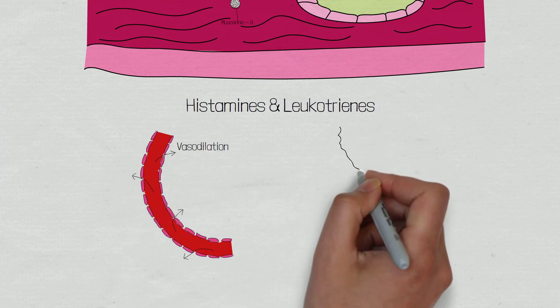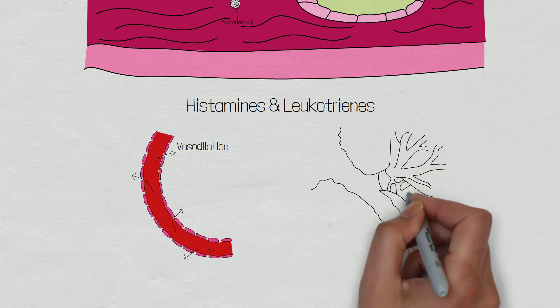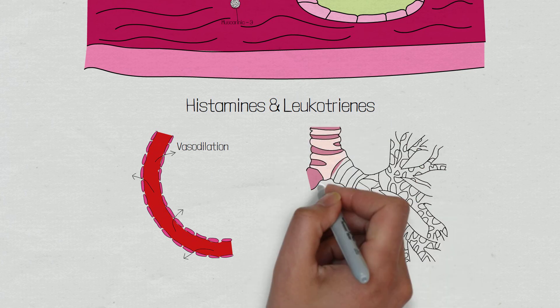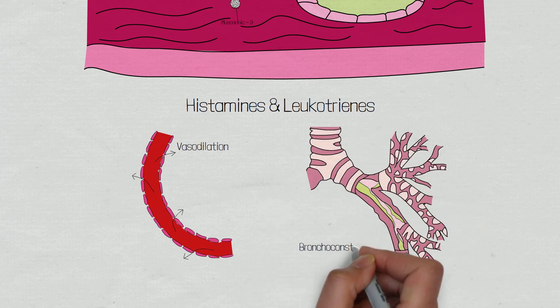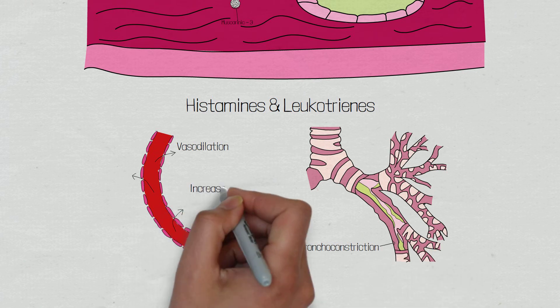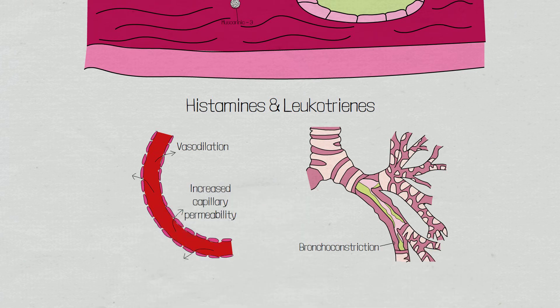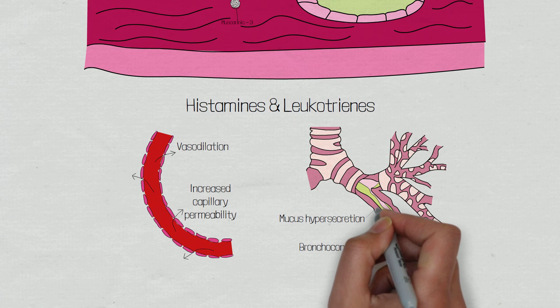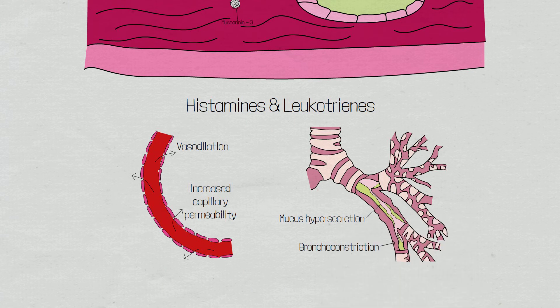Leukotrienes C4, D4 and E4 cause bronchospasm to try and stop the pathogen from further infecting the lung, as well as vasodilation and increased capillary permeability to allow other immune proteins to enter the area. The increase in blood flow and vascular permeability contributes to the bronchoconstriction, worsening the inflammation. Interleukin 4 will also stimulate hypersecretion of mucus from goblet cells, thus narrowing the bronchial lumen even further.